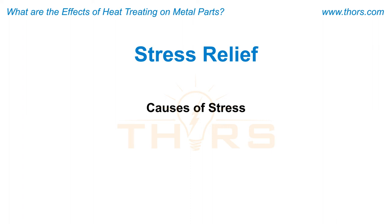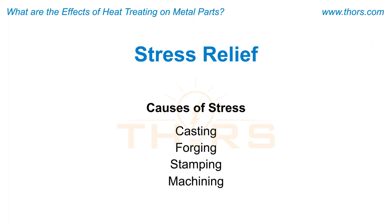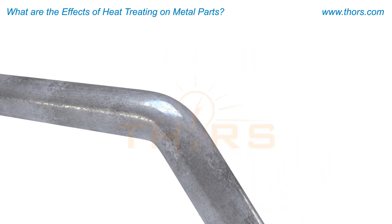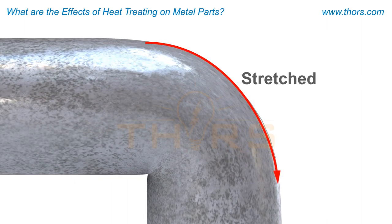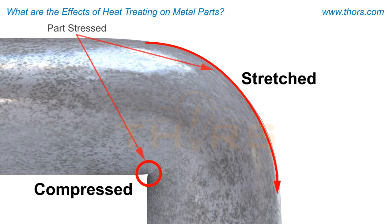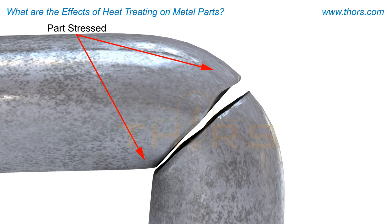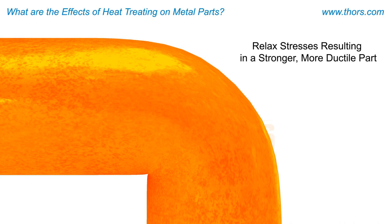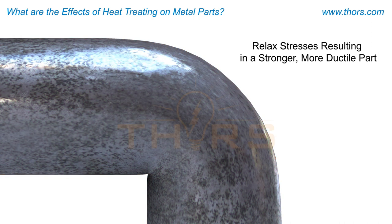Relieving stresses in metal parts is another prominent reason for heat treating. Stresses may be a result of operations such as casting, forging, stamping, and machining. Take this simple metal rod — if the rod was bent during a forming operation, the metal grains on the outside of the curve are stretched while those on the inside are compressed. The part is stressed in these areas, making it more brittle and likely to fail under load. Heat treating will relax distressed grains, causing the metal to be both stronger and more ductile.